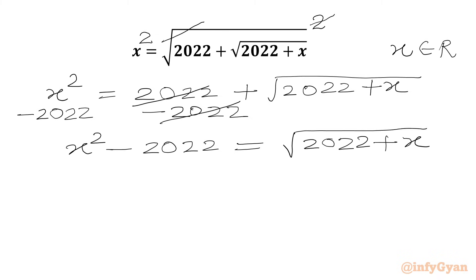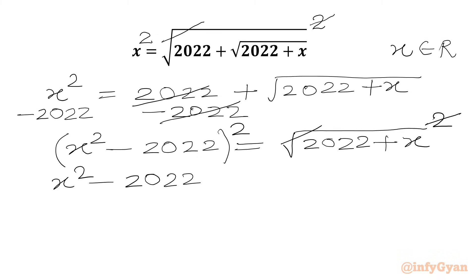We will write X squared minus 2022 equals the square root of 2022 plus X. Again we have a square root in the RHS, so we are going to square once again. This time the square root and square cancel from the RHS, and we can write (X squared minus 2022) squared equals 2022 plus X.